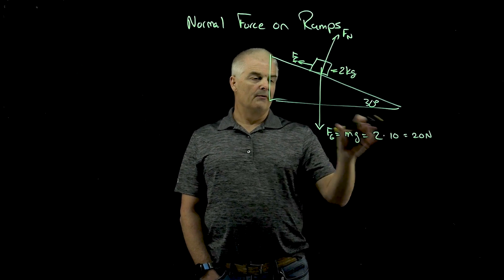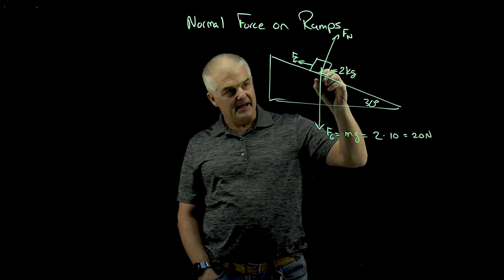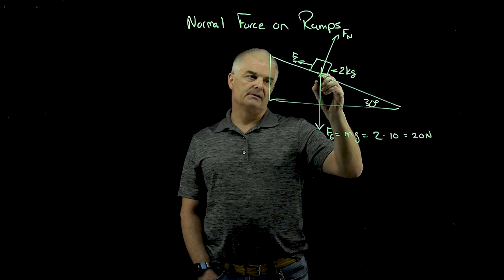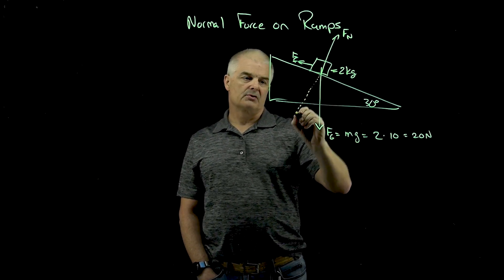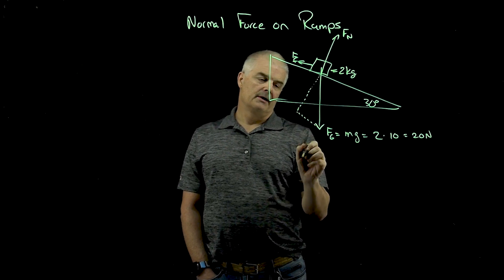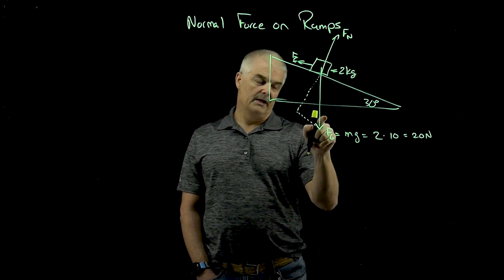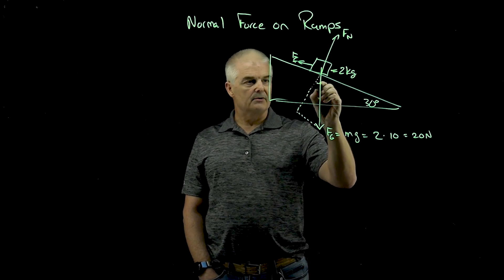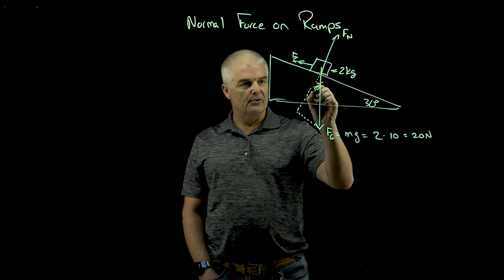What would be the normal force? So it's not the same because there's this angle here. So what you have to do, and we've done this before when we did inclined planes, you make this a triangle, right? Where the hypotenuse is the weight. And if this is 30, these are what we call like triangles, that makes this angle here also 30 degrees.